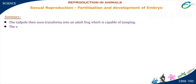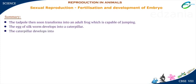The egg of silkworm develops into a caterpillar. The caterpillar develops into the pupa, which finally develops into a beautiful butterfly.